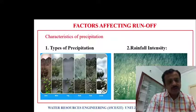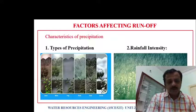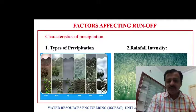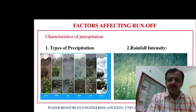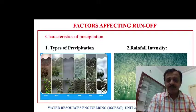We have come across different types of precipitation: rain, snow, fog, mist, dew, hail, etc. Which form of precipitation gives maximum runoff? It is rain. Rain is the type of precipitation which gives the maximum amount of runoff. That is the effect of type of precipitation on runoff.